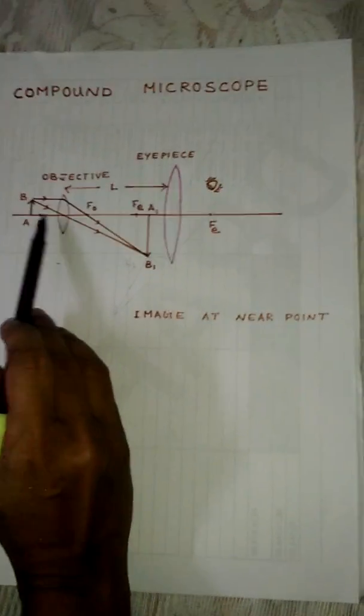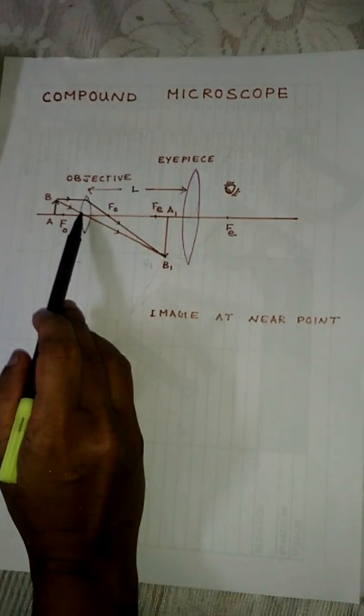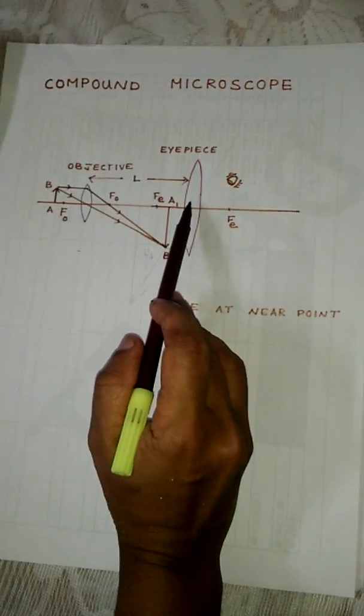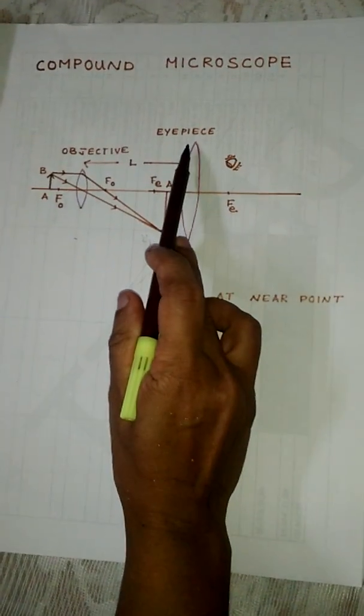One lens is held close to the object. This is the objective. The eye is positioned just near the other lens. This is the eyepiece.